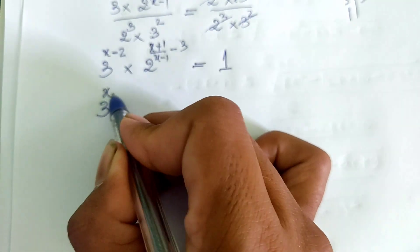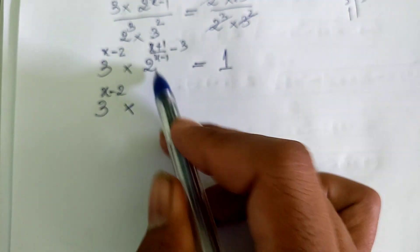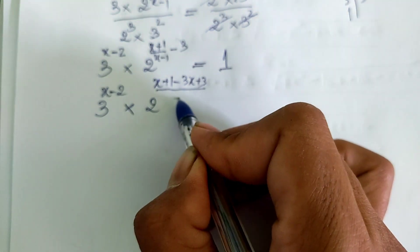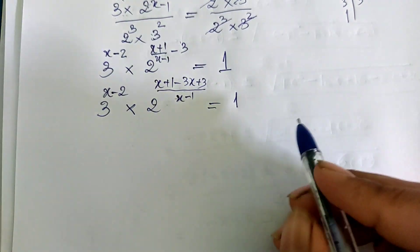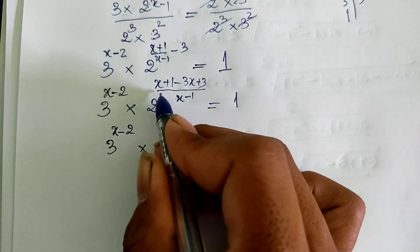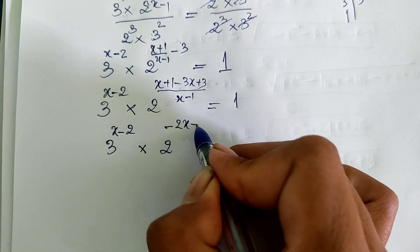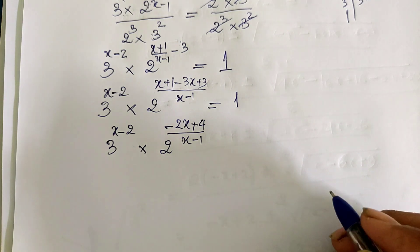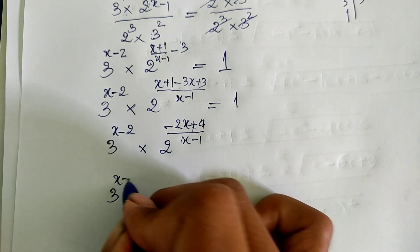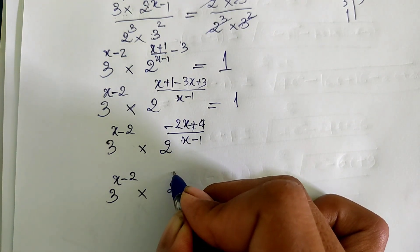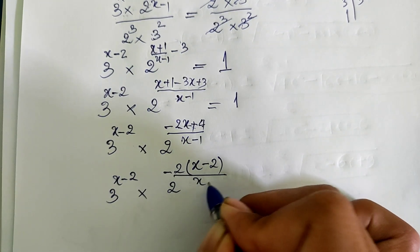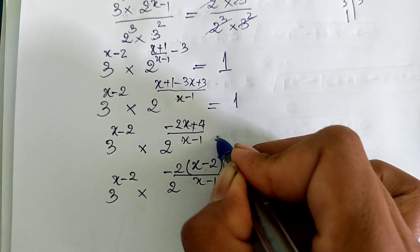Now these terms: 3 power x minus 2, multiplied by 2 power x plus 1, minus 3x plus 3, divided by x minus 1, equals 1. This simplifies to: 3 power x minus 2, multiplied by 2 power minus 2x plus 4, divided by x minus 1, equals 1. And further to: 3 power x minus 2, multiplied by 2 power minus 2, divided by x minus 1, equals 1.